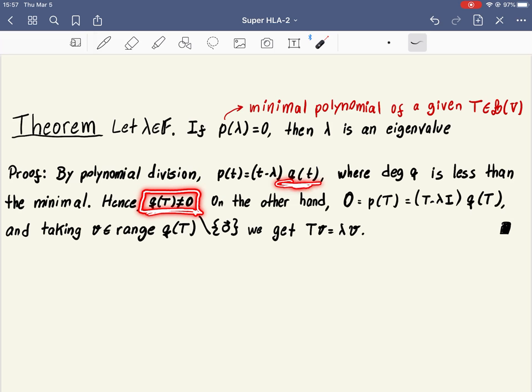If we look at the coefficient of t here is one, of t here is one, the leading coefficient is one, so here it's also one, so it's monic. So q of t cannot be zero.